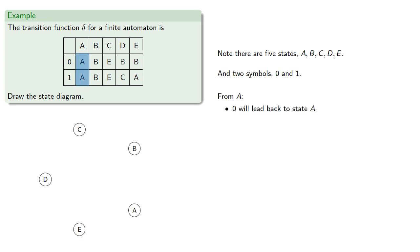From A, 0 will lead back to state A, and we'll represent that by drawing a loop from A to itself. And we'll also write a 0 here to remind us that 0 is what causes us to take this loop.